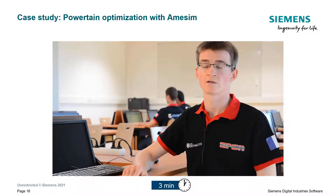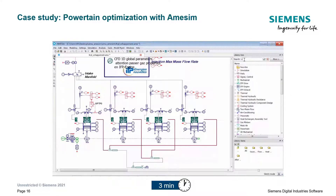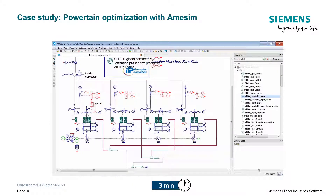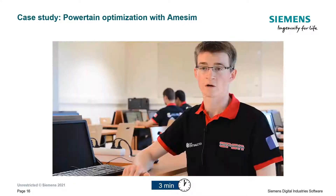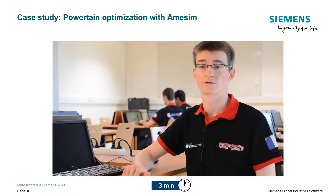We decided to model our engine with an LMS M-Sim model. We wanted to simulate the acoustics of the engine, more precisely in the intake and exhaust areas. So we realized two models: a 0D interior engine model and a 1D model of the pipes. We used several libraries, but mainly the IFP Drive, IFP Engine, and CFD 1D libraries. Thanks to this LMS M-Sim model, we could predict the performance of our engine and thus the performance of our racing car.